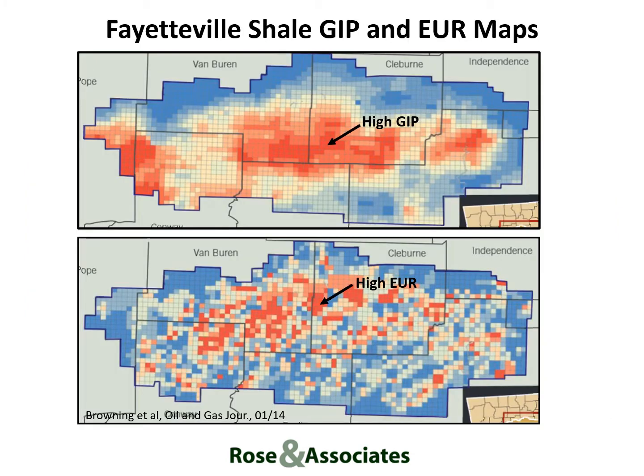These maps of the Fayetteville Shale illustrate why this concept is so important. The top map shows an area of high gas in place in red, which is created by favorable thickness, porosity, and gas saturation values. But there is no guarantee that wells drilled here will also have a high estimated ultimate recovery. In fact, the bottom map, which shows high per-well gas recoveries in red, has much greater complexity as a result of variations in permeability, natural fractures, and pore pressure.